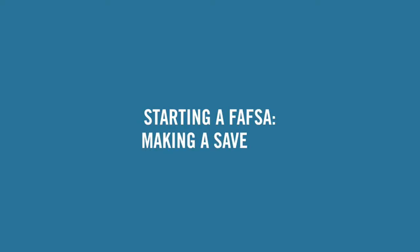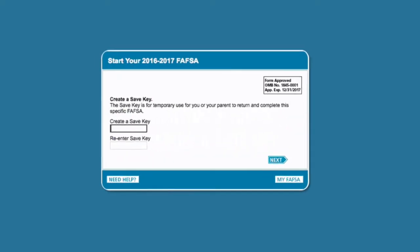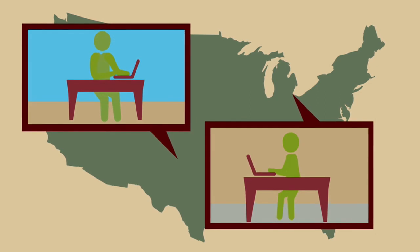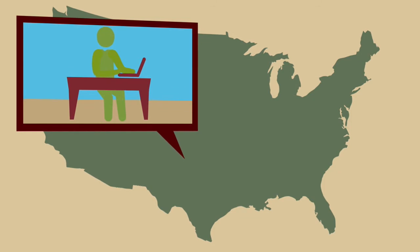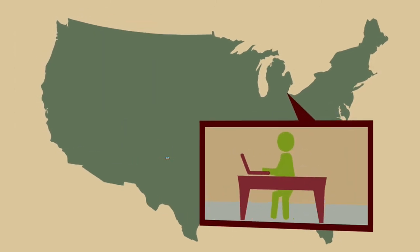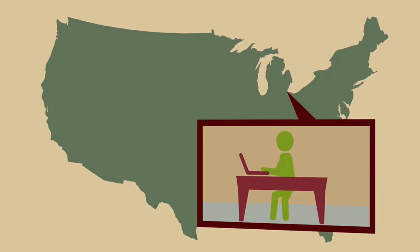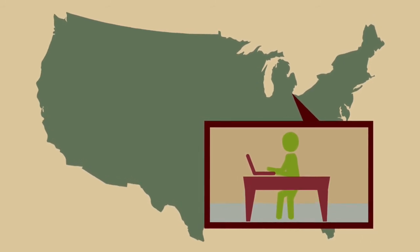Starting a FAFSA — making a save key. Next, you will be asked to create a save key. The save key is a temporary password that lets you save the FAFSA, and then return to the application later to complete it or share the FAFSA with someone else. The save key lets you and your child work on a FAFSA together, even if you aren't in the same location. One of you can start a FAFSA, click the Save button at the bottom of the page, and then exit. Then, the other person can log in at FAFSA.gov using the student's identifiers and the save key, and pick up where the other person left off.